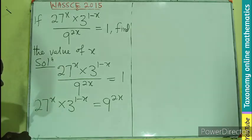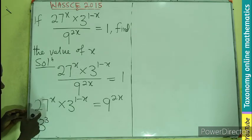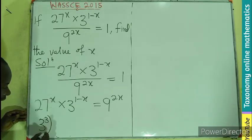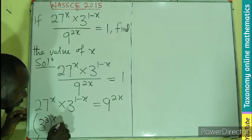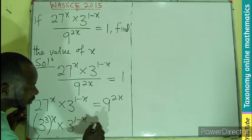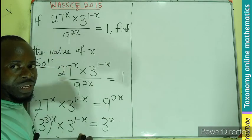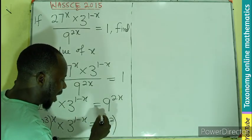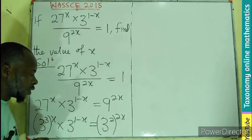So that means I can write 3^3 to represent 27. Then that will still take the power of x, times 3^(1-x) should be equal to 3^2, which gives rise to 9. Then the 9 is having a power of 2x.